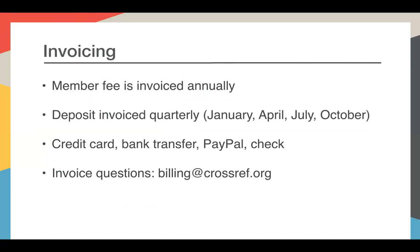We get questions about invoicing. Once you join Crossref, we issue an invoice for your member fee, which is billed annually at the start of each year. Members who join halfway through the year are billed around 50% of the membership fee to take them up to January of the next year. You also get invoiced quarterly for the DOIs you've registered. We accept credit card, bank transfer, PayPal, and check — lots of ways to pay. For billing questions, the email address is billing@crossref.org.